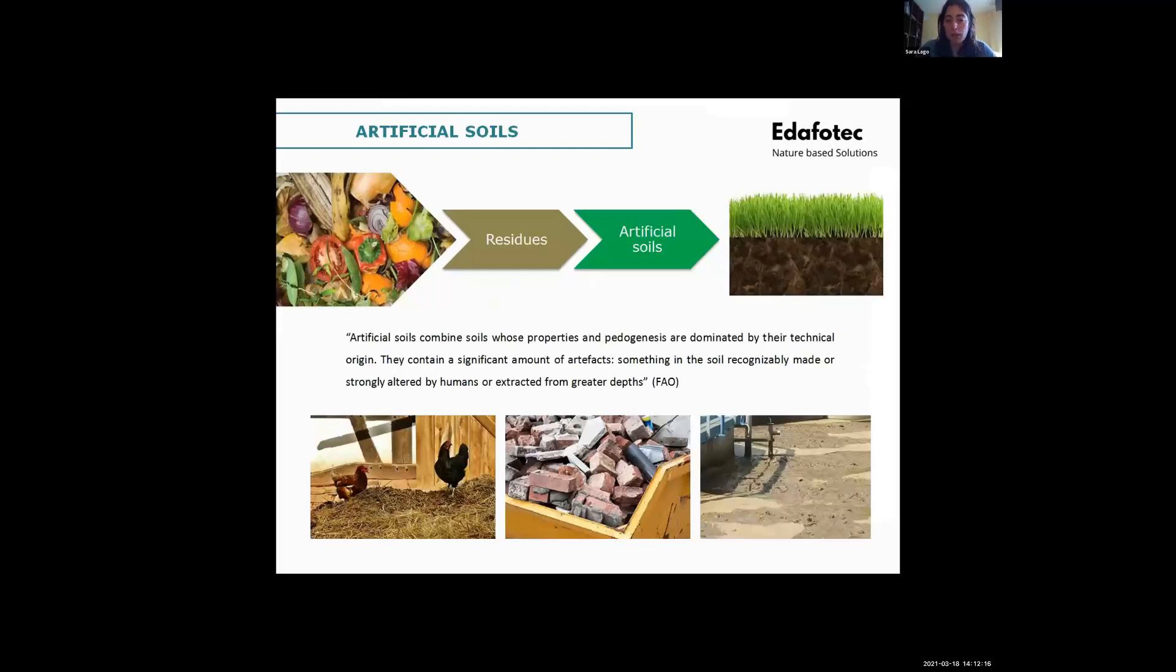Now I would like to talk a bit about artificial soils because in EDAFOTEC we use the biochar and artificial soils combined. Let's say that we use artificial soils as the matrix tool of the biochar. Artificial soils are soils which are made by man or largely modified by them. They are made by residues, both organic and inorganic. For example, manure from animals, construction and demolition waste and also sewage sludge. It's very interesting that artificial soils can be tailor-made for specific purposes, like here we have for environmental purposes. In EDAFOTEC we design it to have the same biochemical characteristics than natural soils, so they behave and evolve as natural soils.